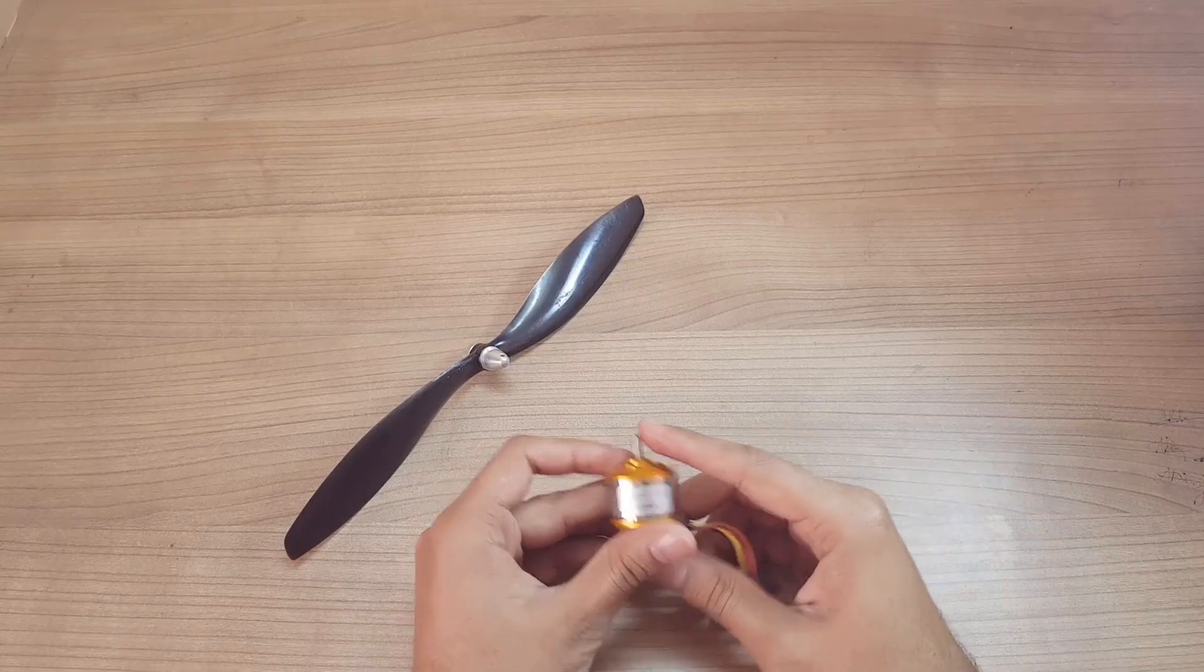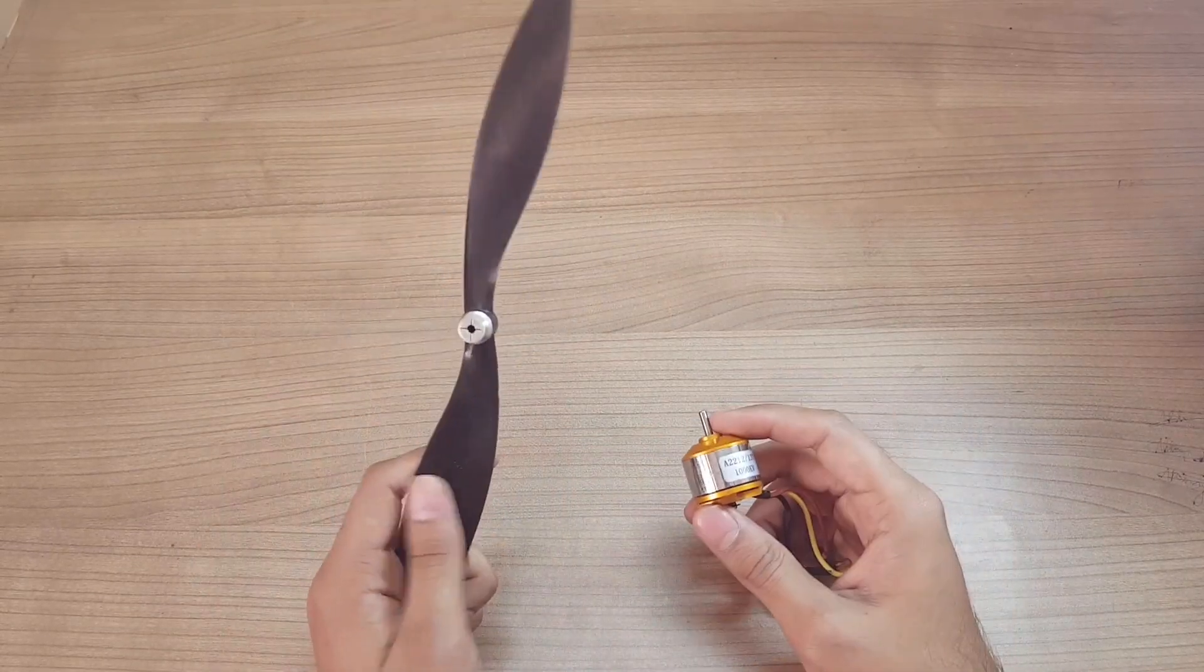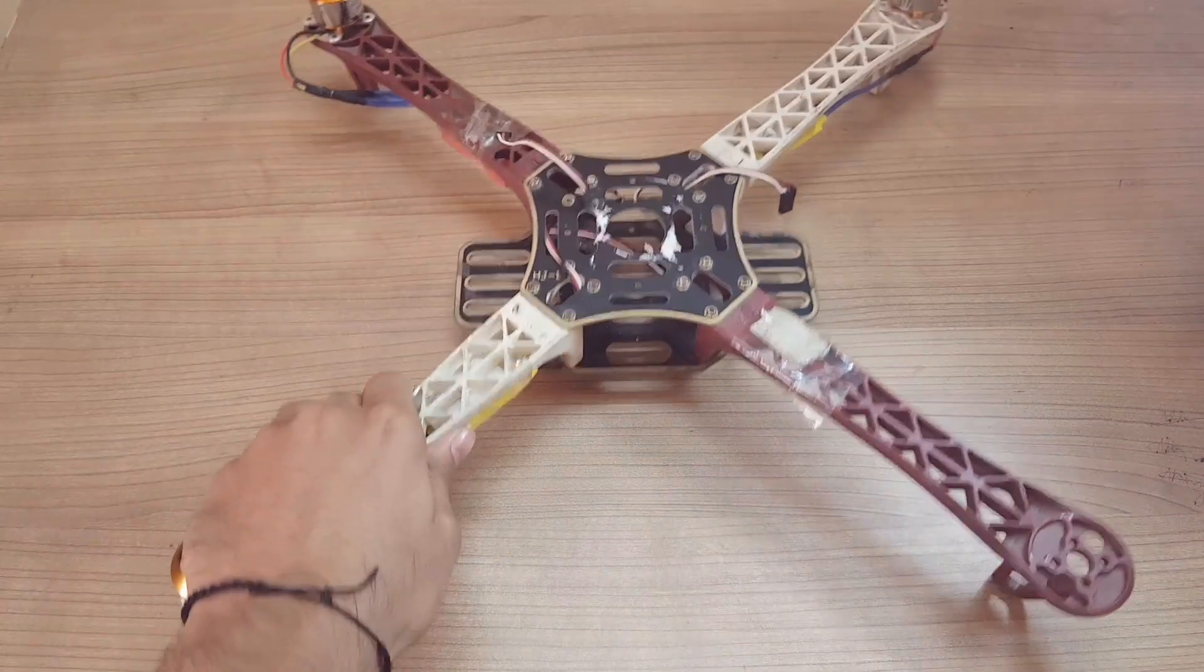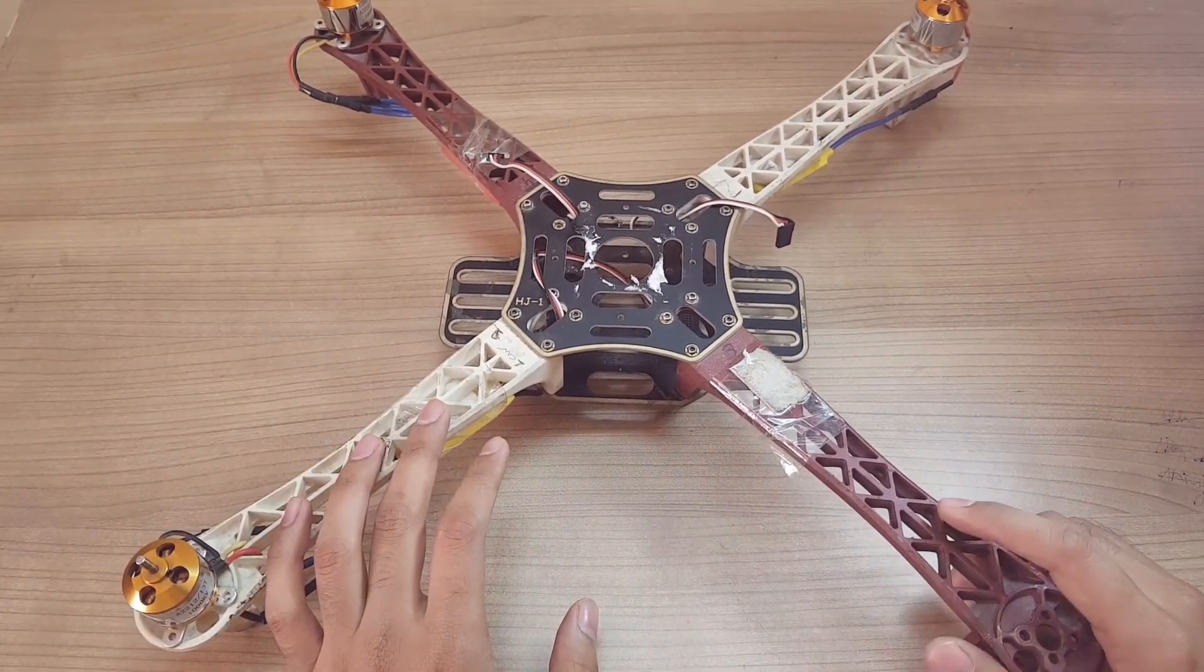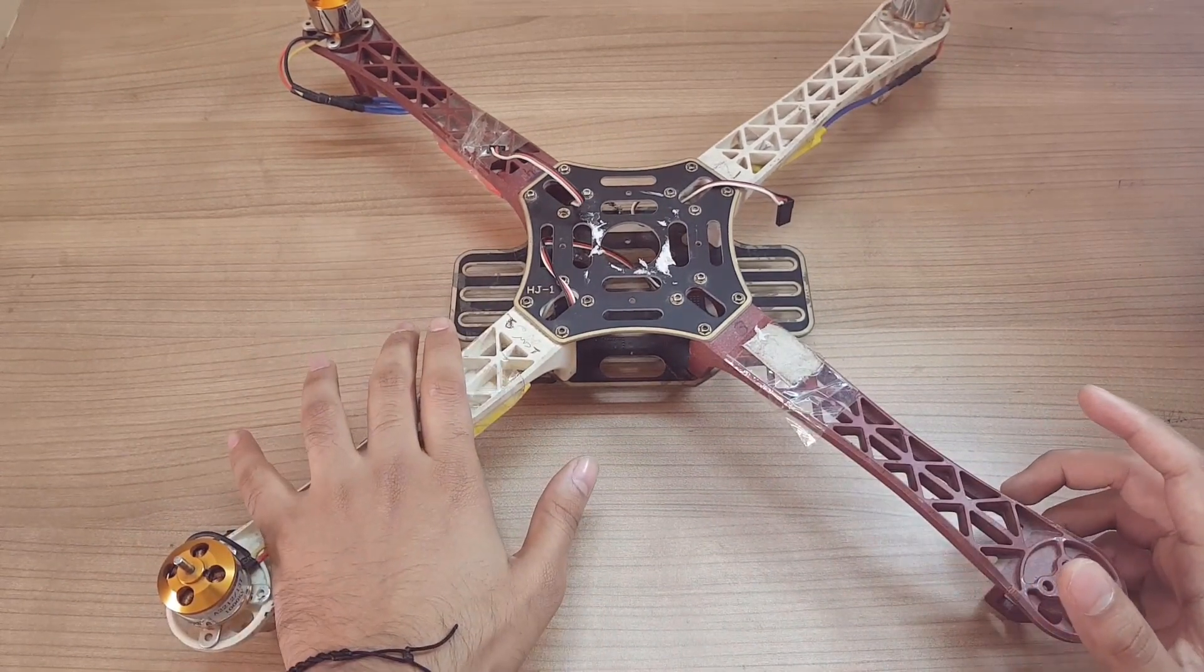In this video I'm gonna explain about brushless DC motors and propellers. Before choosing the type of motors, you need to ensure the weight of your quadcopter. For these types of quadcopters, the maximum weight can go from 1 kg to 1.2 kg.